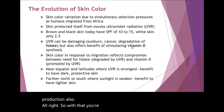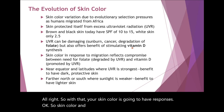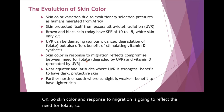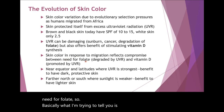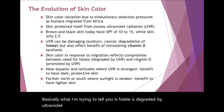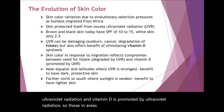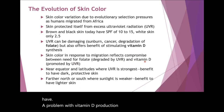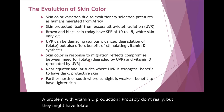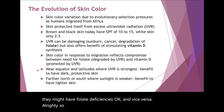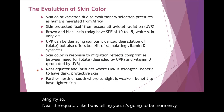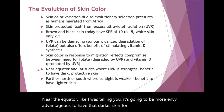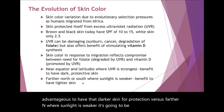Skin color in response to migration is going to reflect the need for folate. Folate is degraded by ultraviolet radiation and vitamin D is promoted by ultraviolet radiation. Those in areas of high UV radiation might not have a problem with vitamin D production, but they might have folate deficiencies. Near the equator, it's more advantageous to have darker skin for protection, versus farther north where sunlight is weaker and it's beneficial to have lighter skin.